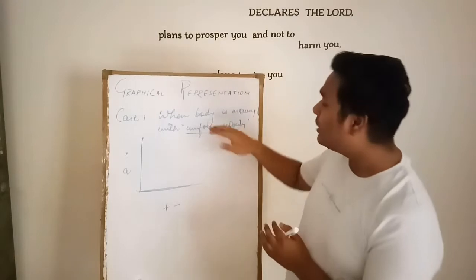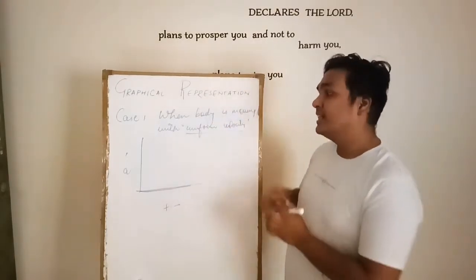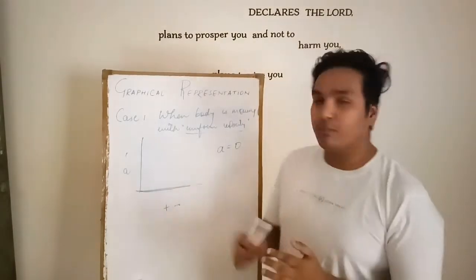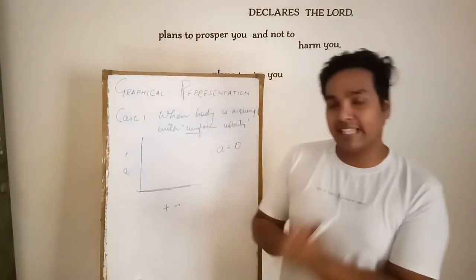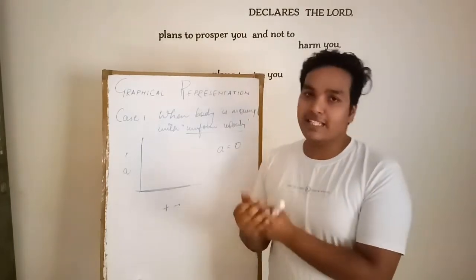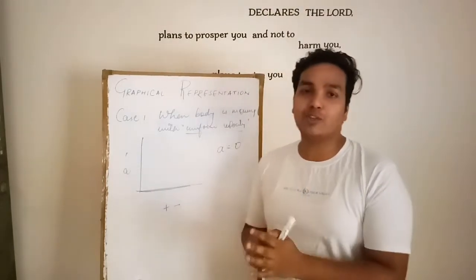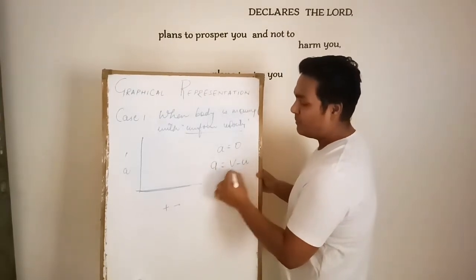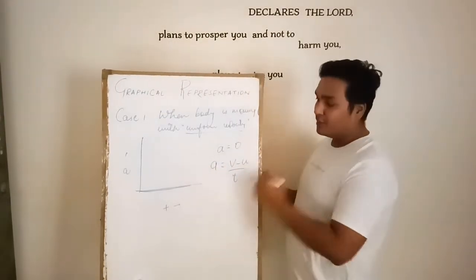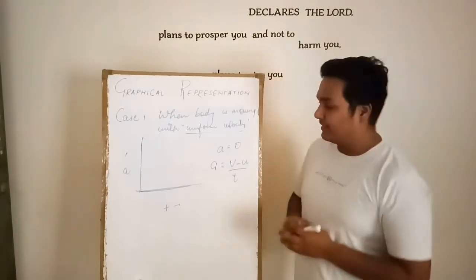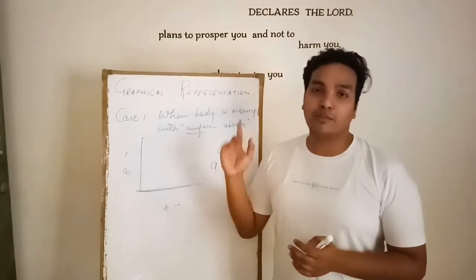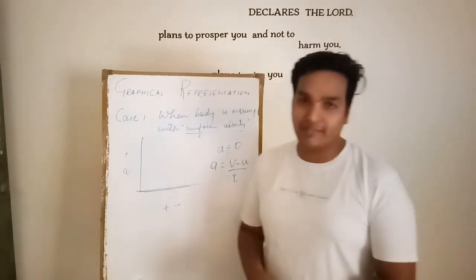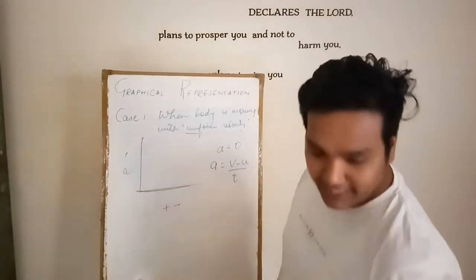When a body is moving with uniform velocity, acceleration is zero. Initial and final velocity will be the same, and we know that acceleration equals v minus u upon t. So if there is no change in velocity, acceleration will be zero. That is the first case of the acceleration-time graph. I hope you have understood it; I will move to the next case.